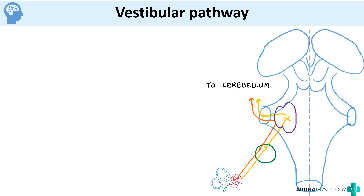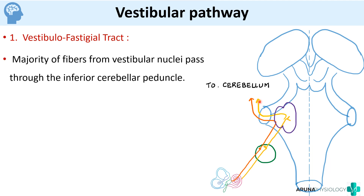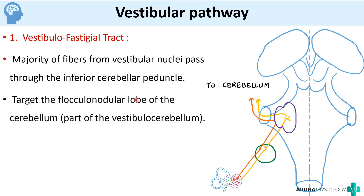The first tract from the vestibular nuclei is the vestibulo-cerebellar tract. From the name itself we know it goes from the vestibular nuclei to the fastigial nucleus, which is present in the cerebellum. The majority of fibers from the vestibular nucleus pass through the inferior cerebellar peduncle and reach the floccular nodular lobe of the cerebellum, which is part of the vestibular cerebellum. This is how the cerebellum plays a role in equilibrium.